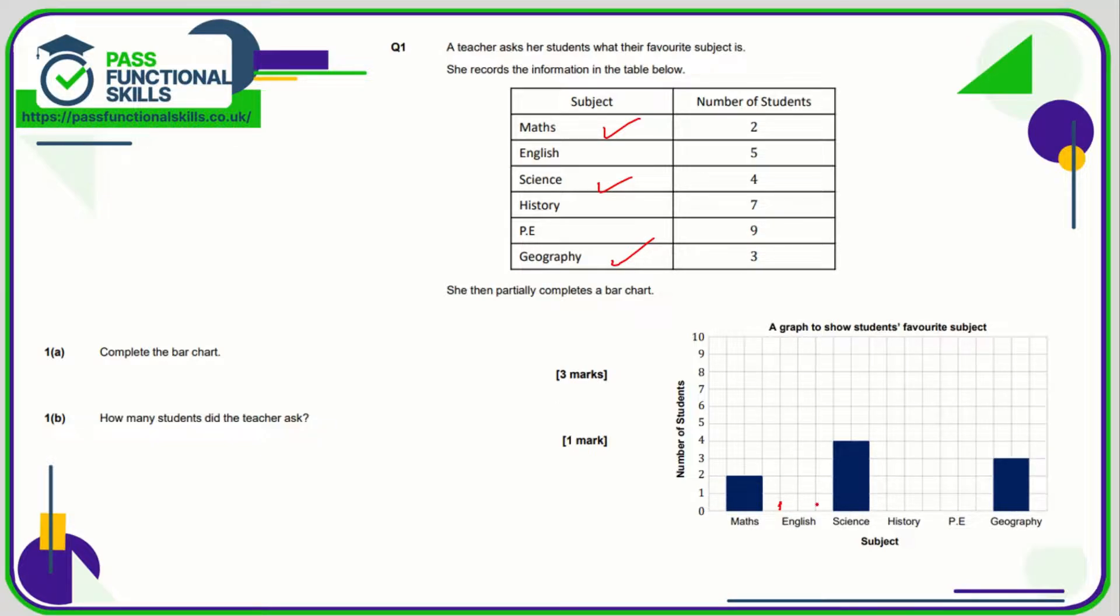So English needs to go all the way up to five, which is here, so that is English done. History is seven, so again it's going to be these two here and it's going to go all the way up to seven.